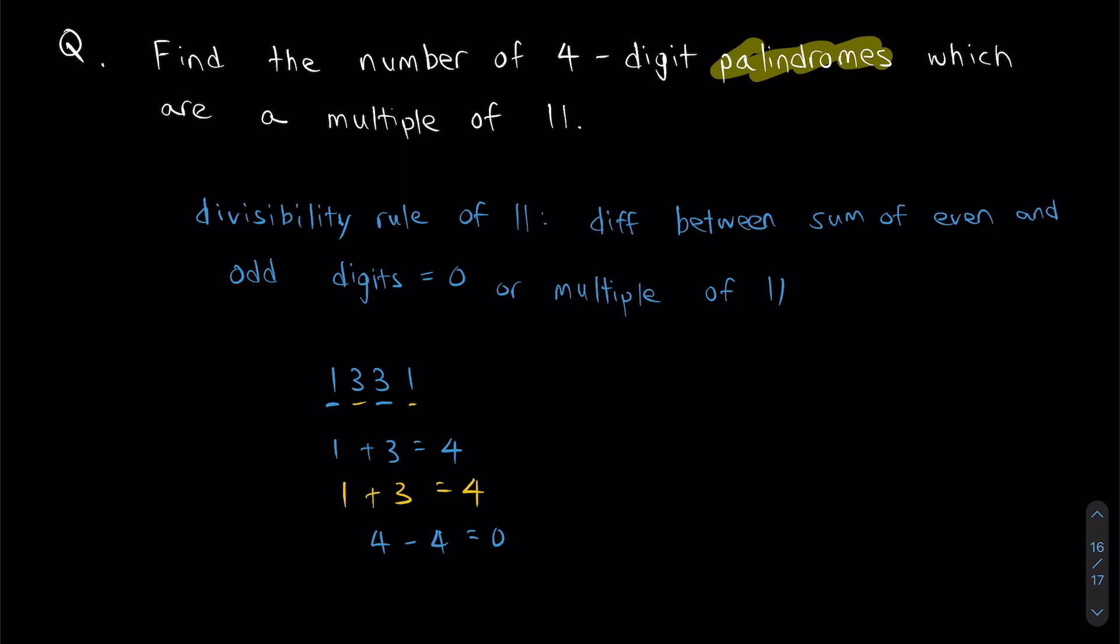And if you look at this, 1, 3, 3, 1 also happens to be a palindrome. Now, if we do some thinking, we realize that there's actually only two kinds of number that can be both a palindrome and divisible by 11.